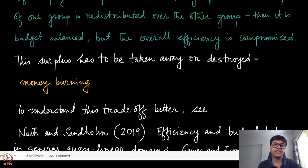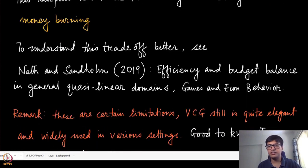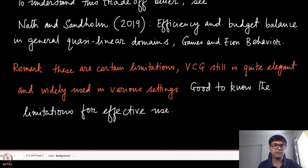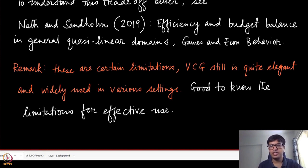The trade-off between money burning and efficiency is discussed in some research work for those interested. In general quasi-linear domains, efficiency and budget balance cannot both be satisfied simultaneously — a result to be discussed later in the course. The reason for discussing all these limitations is to give a better sense of under which situations VCG can be used most effectively, knowing both its positive properties and its constraints.